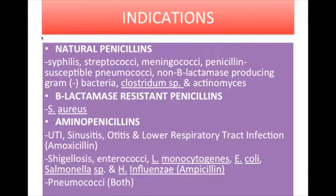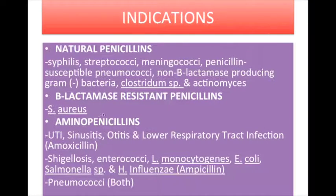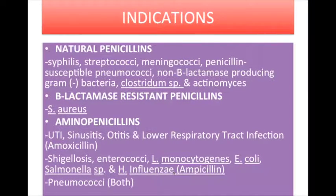Indications of penicillins: for natural penicillins, they are used in the treatment of syphilis and are active against streptococci, meningococci, penicillin-susceptible pneumococci, non-beta-lactamase producing gram-negative bacteria, Clostridium species, and Actinomyces. For beta-lactamase resistant penicillins, they are used in the treatment of S. aureus infections. For aminopenicillins, amoxicillin is used in the treatment of urinary tract infection, sinusitis, otitis, and lower respiratory tract infections. For ampicillin, it is used in the treatment of shigellosis and is active against enterococci, Listeria monocytogenes, E. coli, Salmonella species, and H. influenzae. Both ampicillin and amoxicillin are used in pneumococcal infection.